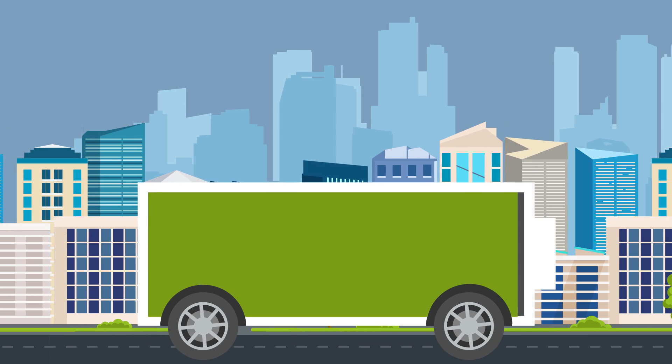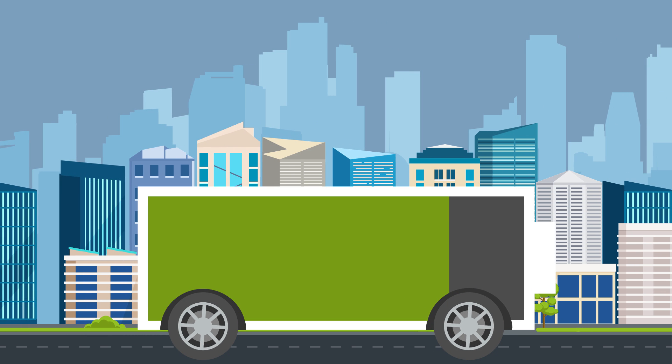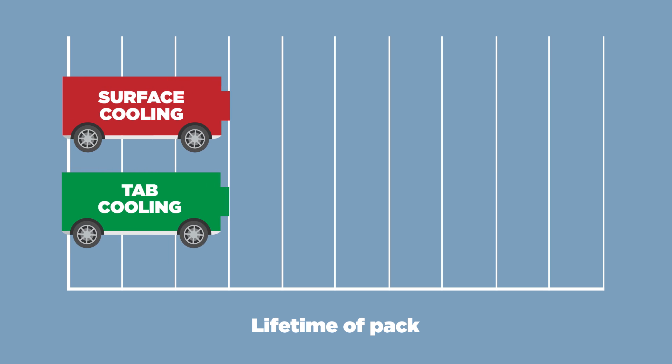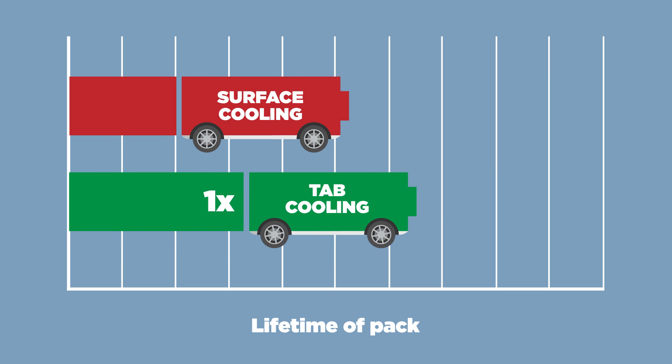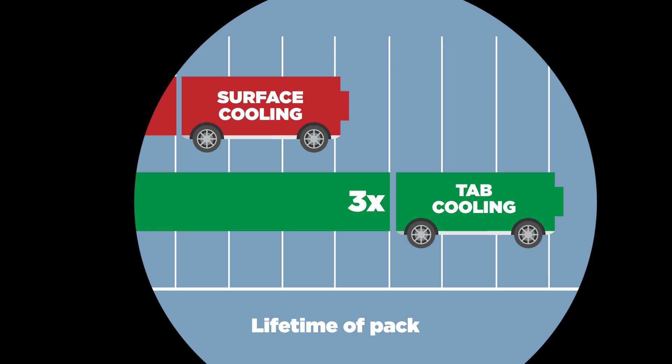In automotive applications, 80% capacity is considered to be the end of a battery pack's useful life. In this situation, using tab cooling rather than surface cooling would be equivalent to extending the lifetime of a pack by three times, or reducing the lifetime cost by 66%.